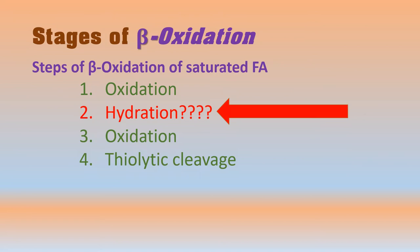There are many fatty acids which have a double bond. Those with one double bond are known as monounsaturated fatty acids, and those with more than one double bond are known as polyunsaturated fatty acids. Most fatty acids in triglycerides — particularly the phospholipids of animals and plants — are unsaturated. These double bonds are present in cis configuration and cannot be acted upon by enoyl-CoA hydratase.